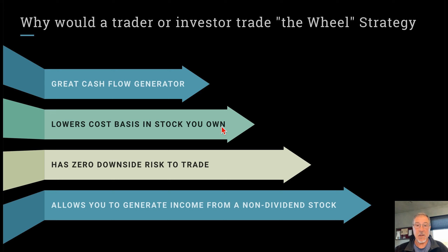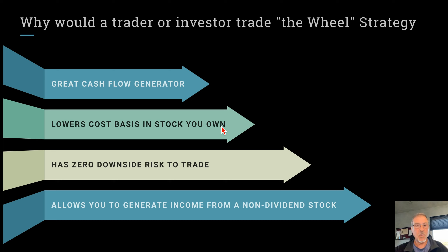It also allows you to generate income from non-dividend stocks. I have quite a few stocks in my portfolio — things like Google, NVIDIA, Amazon — a lot of stocks that essentially have no dividend to them. This is a way I can generate income off those stocks. I call it renting out your stock, and you'll see what I mean in part two.